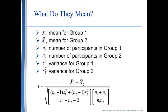When we break it all down it becomes a little easier to read. Our t-obtained value is equal to the mean for group 1 minus the mean for group 2, divided by the square root of the number of participants in group 1 minus 1, times the variance of group 1, plus the number in group 2 minus 1 times the variance of group 2.